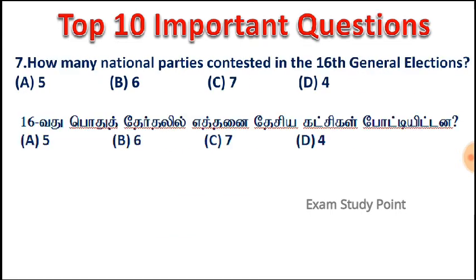Question 14: In the 14th Pudutheri (Pondicherry) election, how many parties contested? Option A: 5, Option B: 6, Option C: 7, Option D: 4. The correct answer is Option B: 6. In the 16th Pudutheri election, 6 parties contested.